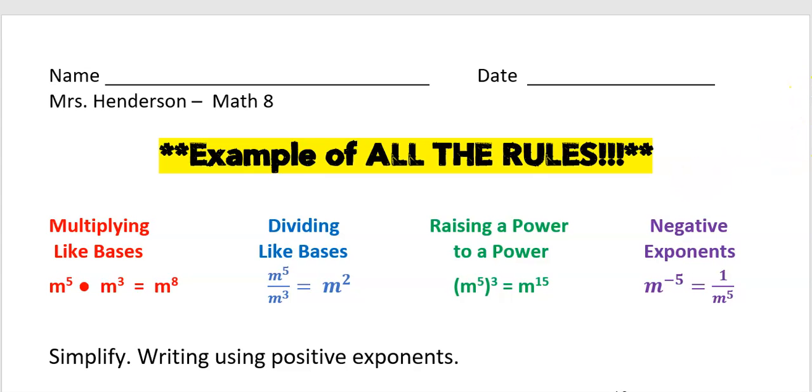At the top of your worksheet you'll see an example of the four rules that we've been working with. Multiplying like bases is adding exponents, dividing like bases is subtracting exponents, raising a power to a power is multiplying exponents, and negative exponents is when we take the reciprocal to make it positive.